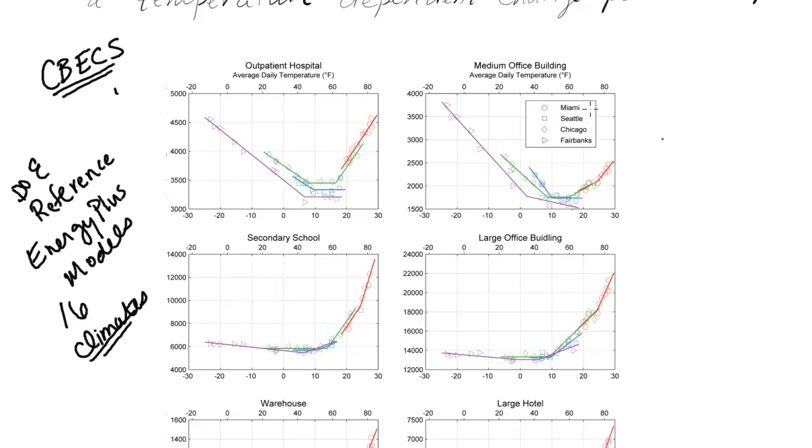And they relate to the climates Miami, Seattle, Chicago, Fairbanks. So hot and humid to very cold, mild and humid to mild and, well, it's still probably considered humid because of Lake Michigan being around, but a little less rain perhaps than Seattle.